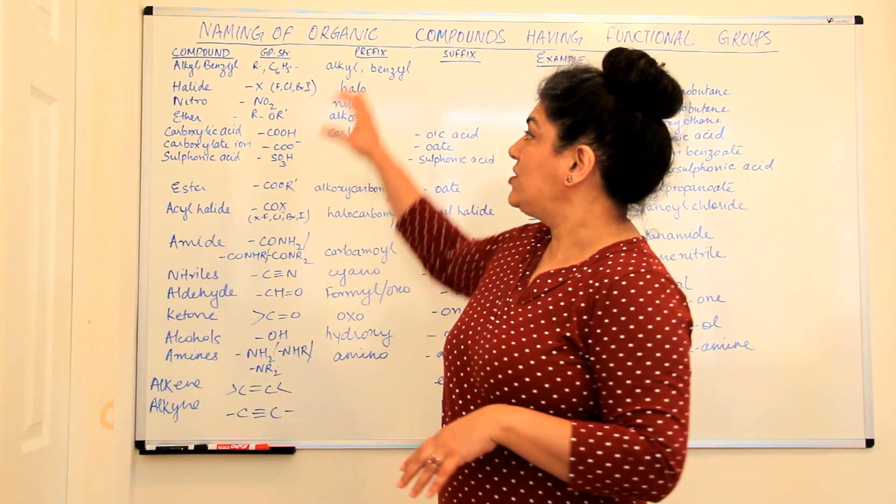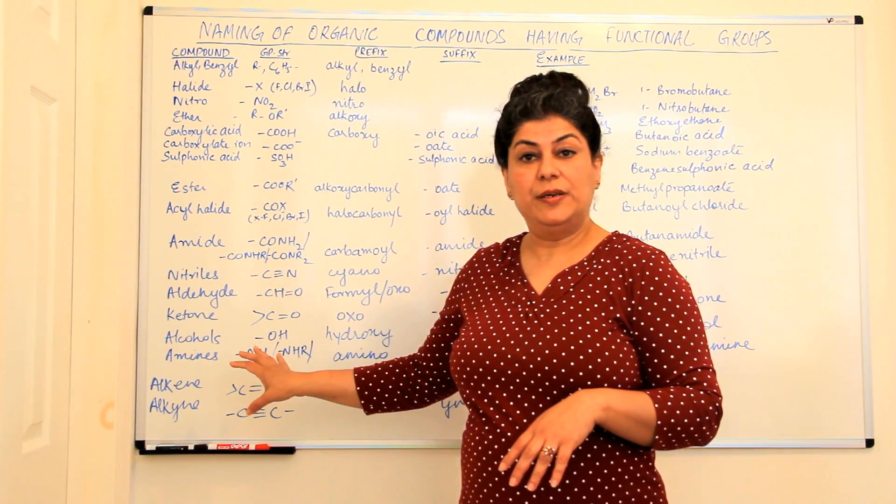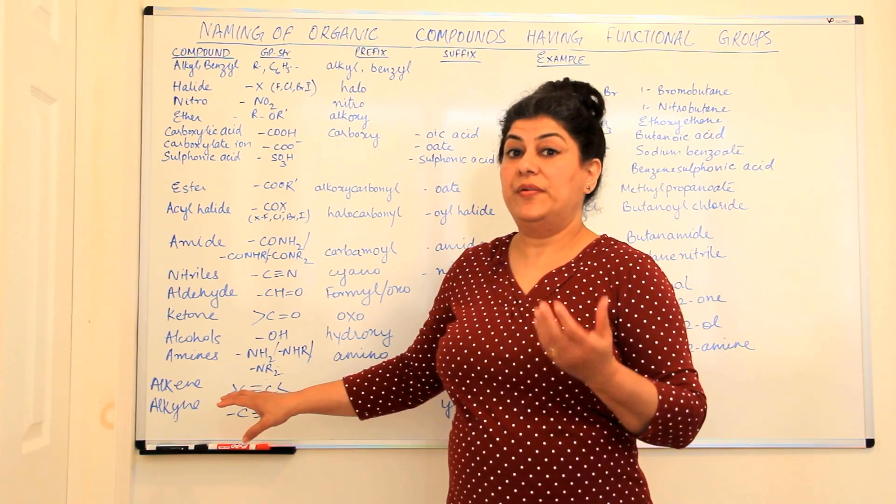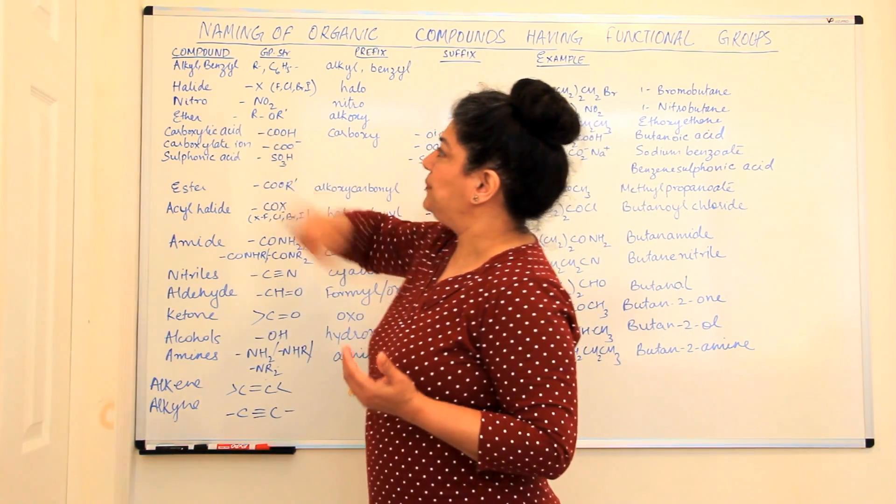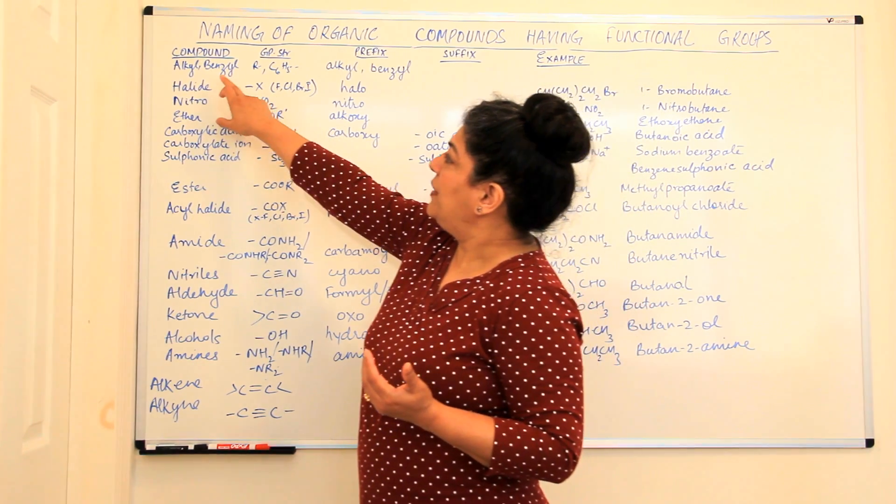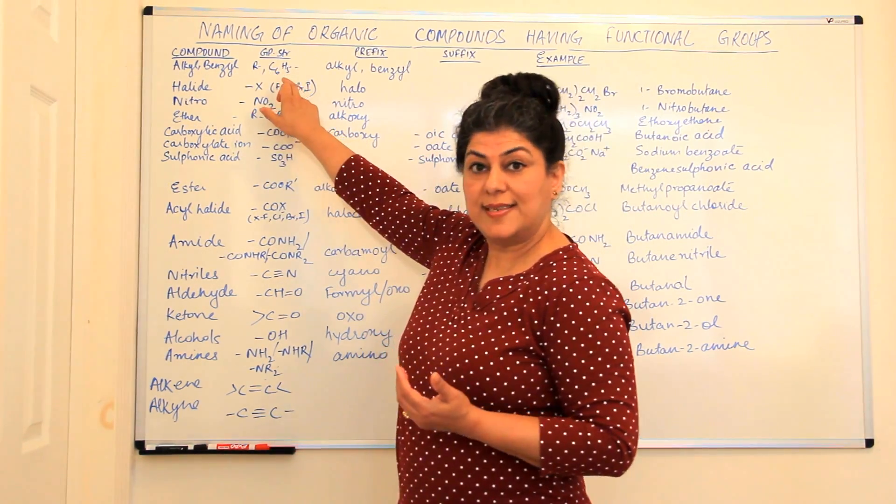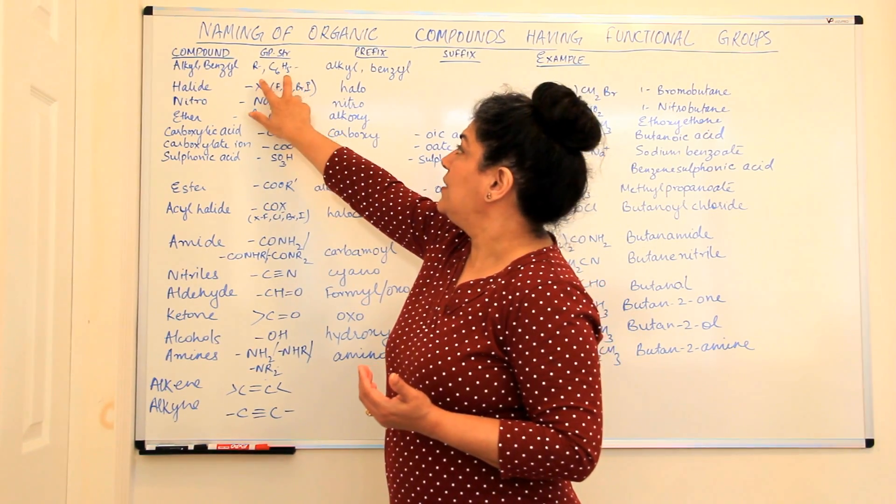Now I have made a list of some of the functional groups here and these functional groups I've tried to arrange them according to their reactivity till ether. Let us look here, alkyl and benzyl group is R, C6H5 is the group structure.